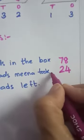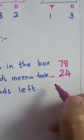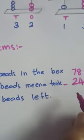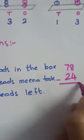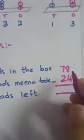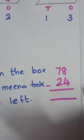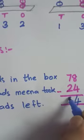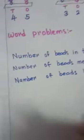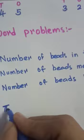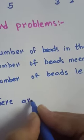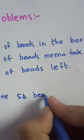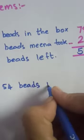Now, took means she has taken away. So, we have to subtract. We have to find the number of beads left in the box. So, 8 minus 4 is how much? 4. 7 minus 2? 5. So, there are 54 beads in the box.